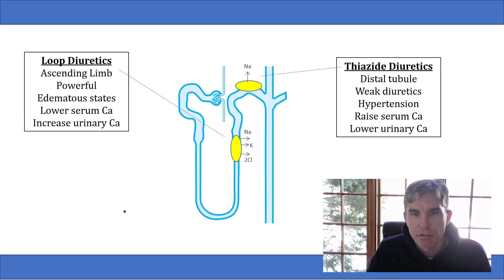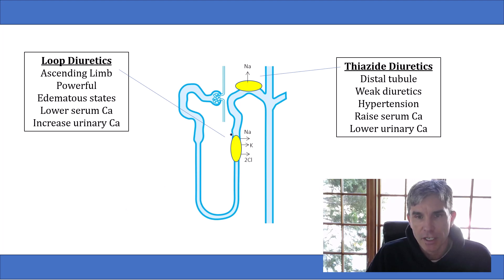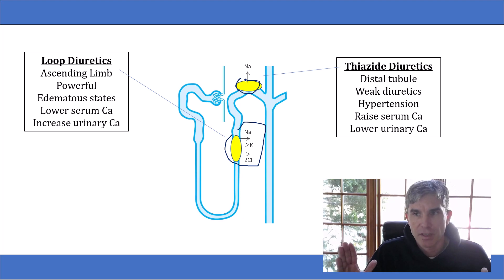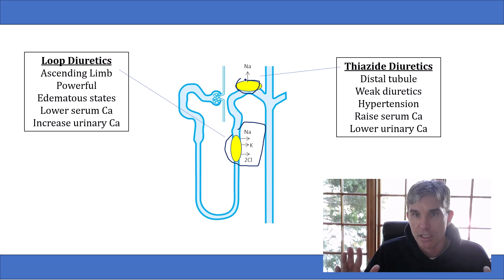I made this slide to remind you of the different ways that thiazide and loop diuretics work. Loop diuretics work on the thick ascending limb of Henle on the channel that reabsorbs sodium, potassium, and chloride. Thiazide diuretics work in the distal tubule on a channel that reabsorbs sodium. There are two huge differences between thiazides and loops that you should know for your board exams, other than the places where they work in the nephron.